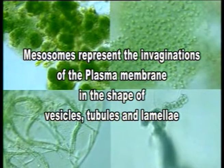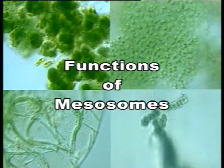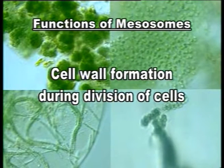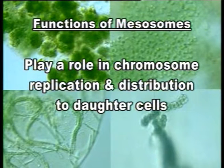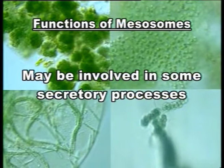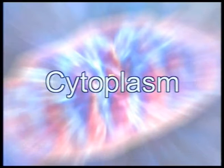There is also an internal membrane system in bacteria called mesosomes, which represent invaginations of the plasma membrane in the shape of vesicles, tubules, and lamellae. They are present in both gram-positive and gram-negative bacteria but more prominently in the former. Functions attributed to mesosomes include involvement in cell wall formation during cell division, a role in chromosome replication and distribution to daughter cells, and involvement in secretory processes.